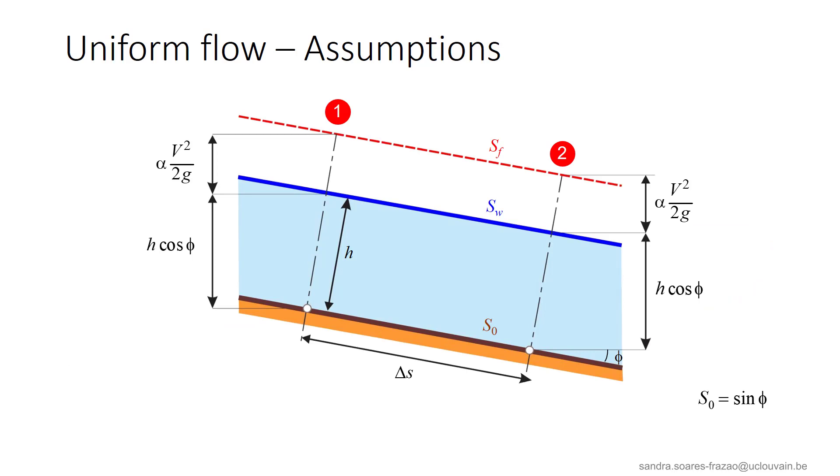Let us consider a uniform flow between two cross-sections 1 and 2. We define the bed slope as S0, which is the sine of angle phi between the bed and the horizontal. As the water depth is constant, the free surface is parallel to the bed. And Sw, the free surface slope, is then equal to S0. Then, as the velocity V is also constant, the energy grade line represented by Sf is also parallel to S0 and Sw.